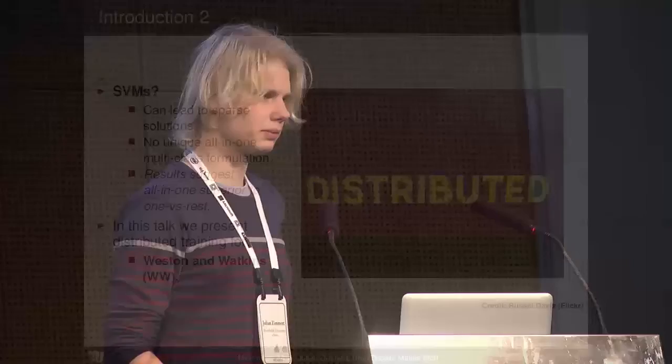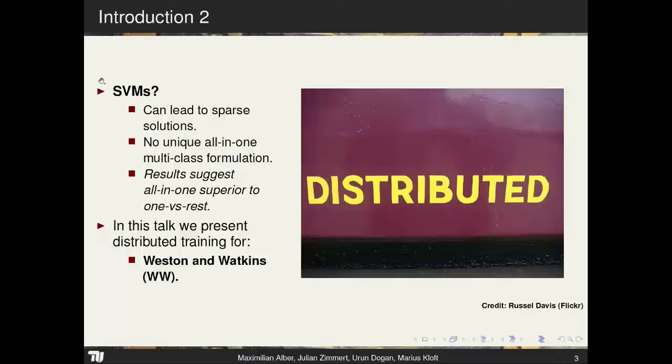We're doing SVMs. Part of the reason is that with many datasets, linear classification is sufficient, especially in large text datasets. We can also get sparse solutions with SVMs — sparse in the dual, which is good for runtime, and often sparse in the model itself, so after training we don't need to save a huge dense matrix.